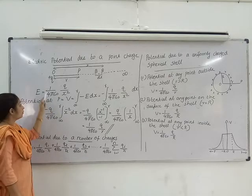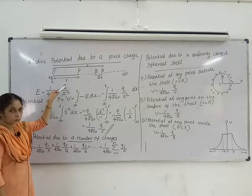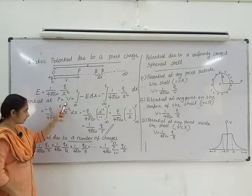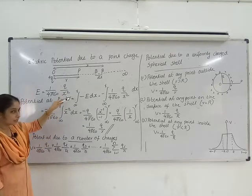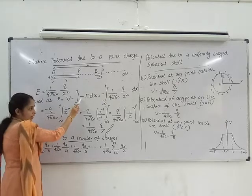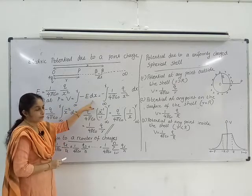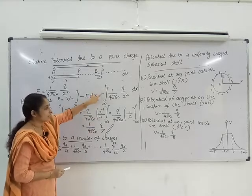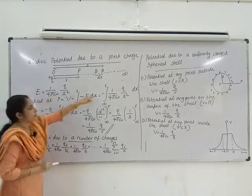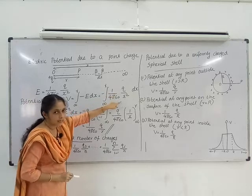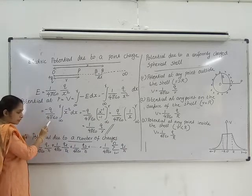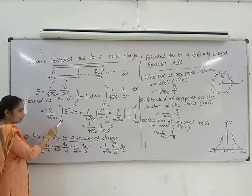Electric intensity E is equal to 1 by 4 pi epsilon 0 into Q by X square. Then potential at P, that is V, is equal to integral from infinity to R of minus E dX. It is equal to minus integral from infinity to R of 1 by 4 pi epsilon 0 into Q by X square dX. It is equal to minus Q by 4 pi epsilon 0 into integral from infinity to R.